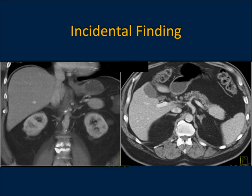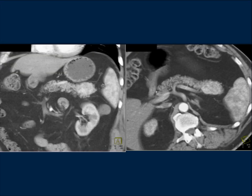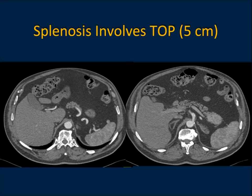Another example: this was initially read as a neuroendocrine tumor — an enhancing lesion in the tail of the pancreas. That's a reasonable thought, but if you look carefully, it looks identical to the spleen. Through the various phases, it has that moiré pattern, just like the spleen. Could this simply be splenic tissue sitting on the tail of the pancreas? It's a tough call because you don't want to miss a 3-centimeter neuroendocrine tumor. Nuclear studies were done, but we weren't positive. This turned out to be a 5-centimeter spleen — splenosis involving the tail of the pancreas.